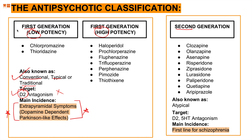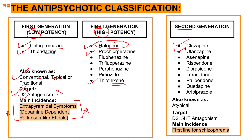First generation low potency drugs include chlorpromazine and thioridazine. First generation high potency drugs include prochlorpromazine, haloperidol, and thiothixene. If you need to pick one or two names from each category: for low potency remember chlorpromazine and thioridazine, and for high potency remember haloperidol, which is a very common high-potency drug.